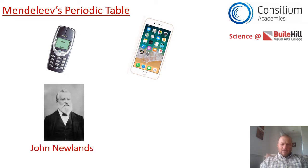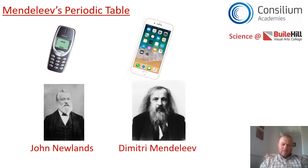The Nokia of the Periodic Table would have been a gentleman called John Newlands — we'll have a look at him in a second. But Dmitri Mendeleev came along after John Newlands and built upon Newlands' work to build a better Periodic Table.